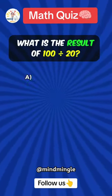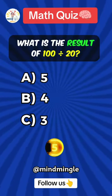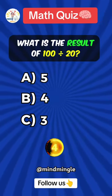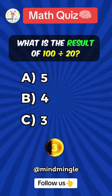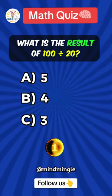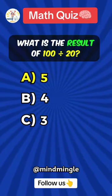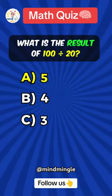What is the result of 100 divided by 20? Answer A: 5.